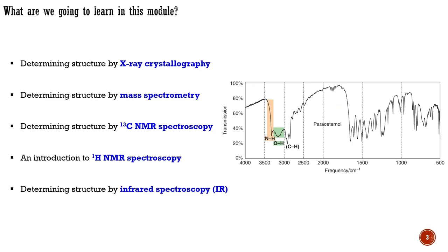Of these, NMR is more important than all the rest put together, so we shall return to it in more detail in a separate module. After we have discussed a wider range of molecules, there will be a review module to bring the ideas together and show you how unknown structures are really determined. Note that this is just an introductory module; for more details on any spectroscopic methods, you should refer to more specialized courses on spectroscopy.